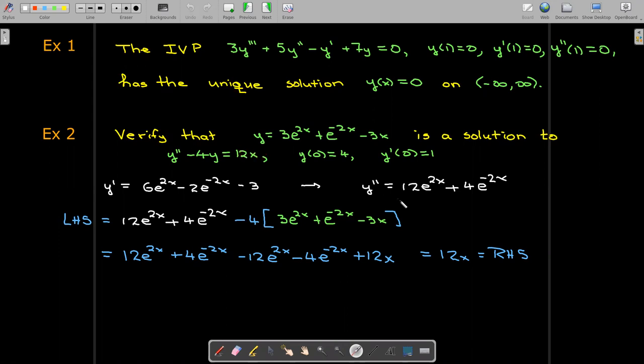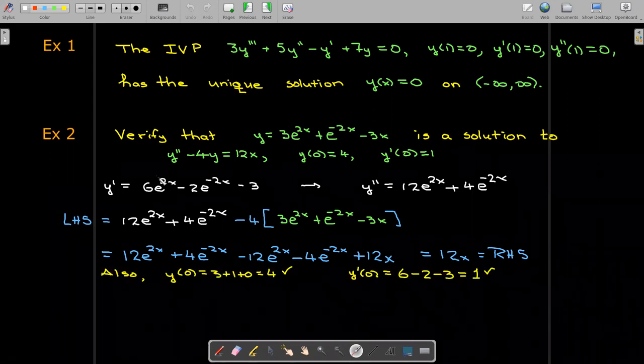Now the only thing that we're left to check are the initial conditions. So certainly y(0) just substituting into our given equation is indeed 4 and y prime. Here we took the first derivative. So let's go ahead and put 0 in there and sure enough we get 1.